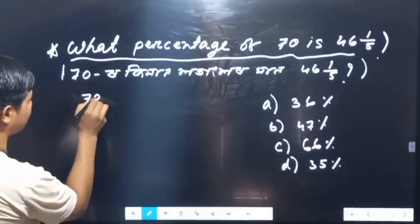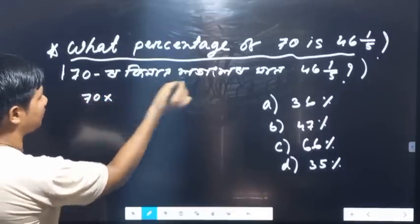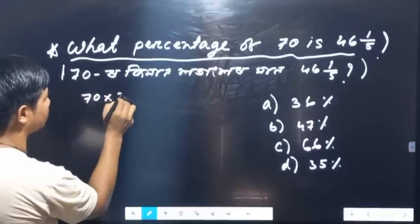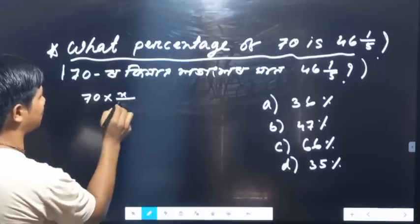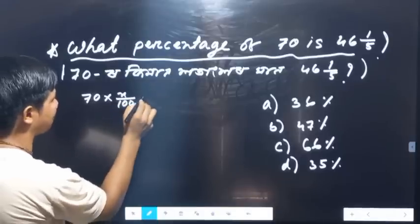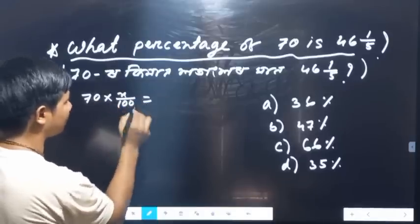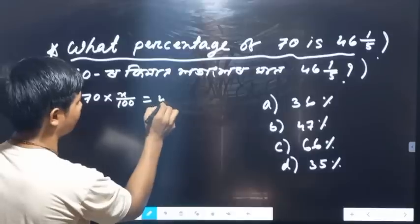I have 70 and I have 20 percent. I have 100 percent. The value is 46 and 1 by 5.